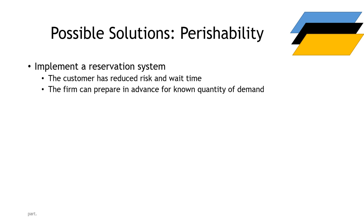Disney uses ride passes; a lot of theme parks use exclusivity tickets and reservation systems to reduce queuing time. VIP memberships, gold passes, business passes, the Qantas club — these are all perishability solutions using reservation and exclusivity systems to reduce risk, guarantee access to space, and reduce wait time. A reservation system reduces the risk of the service perishing before you can access it.